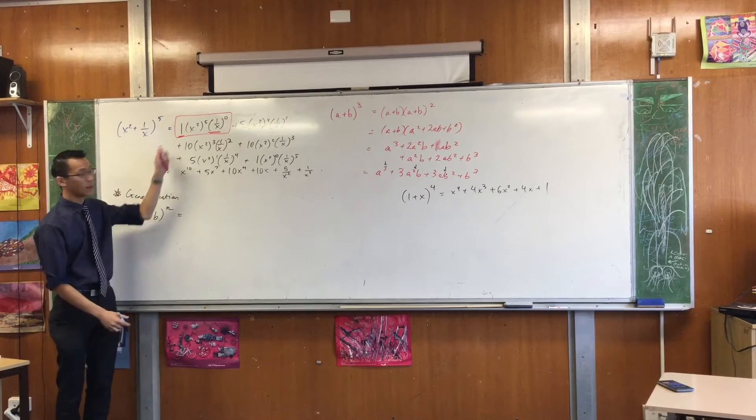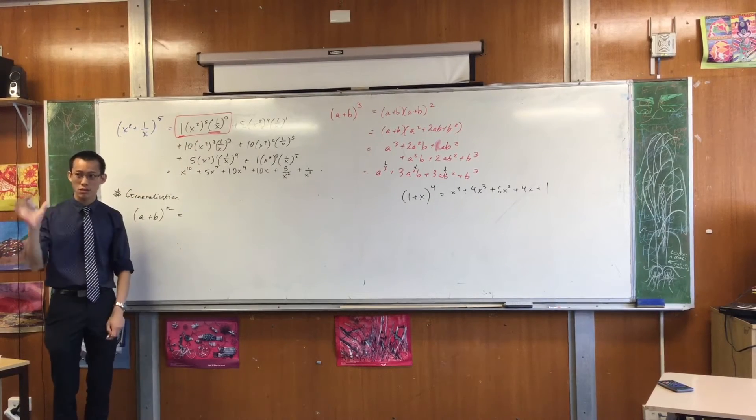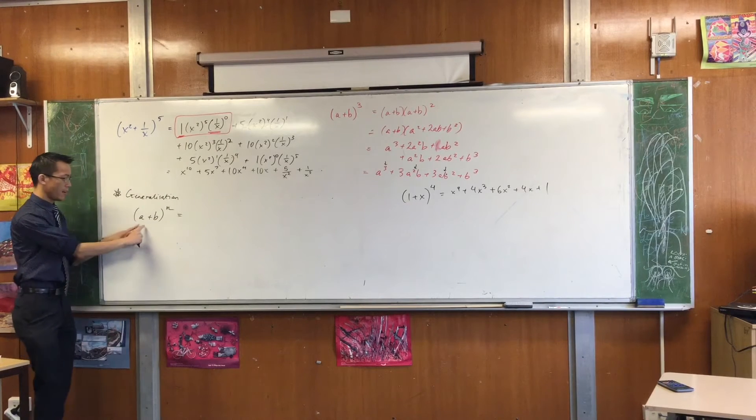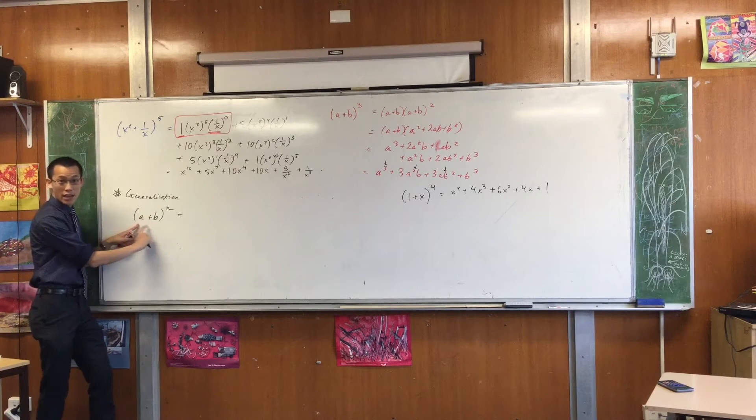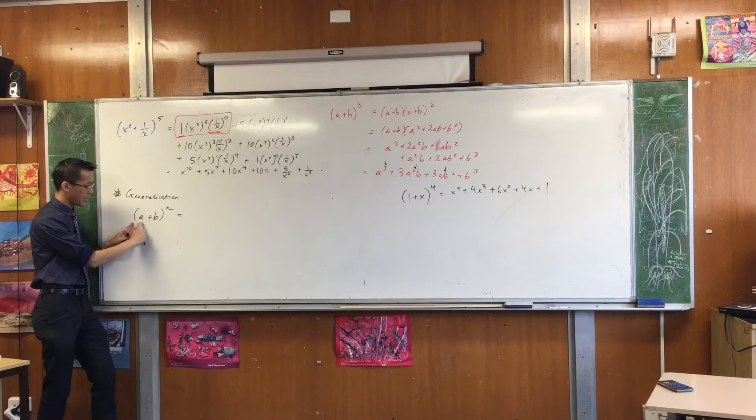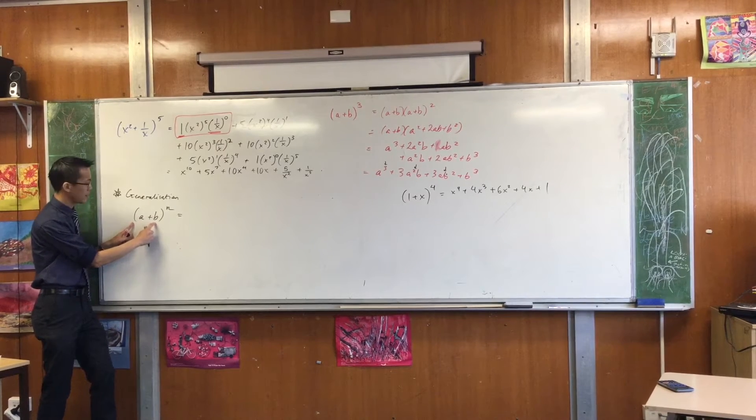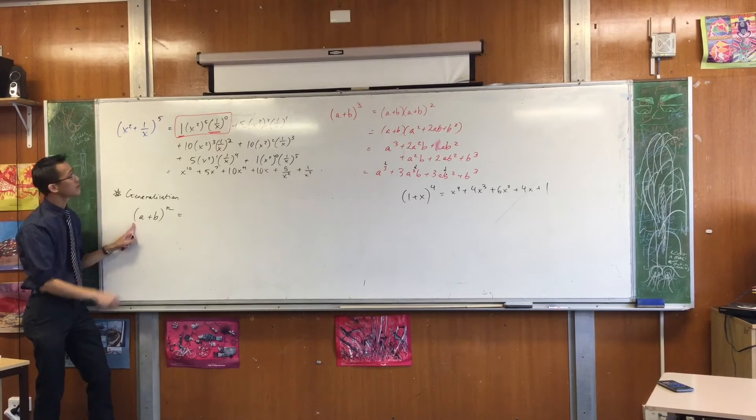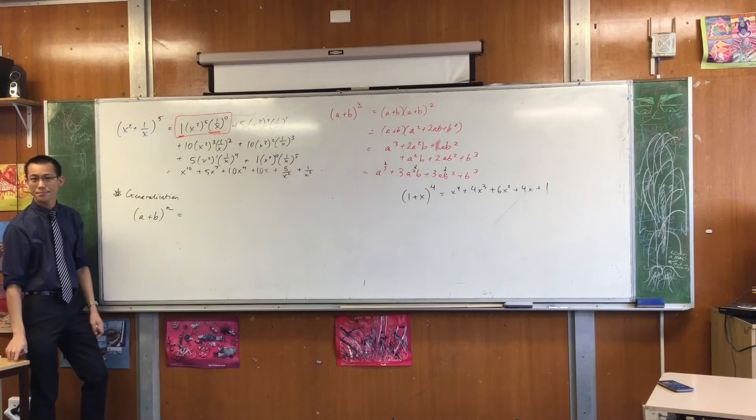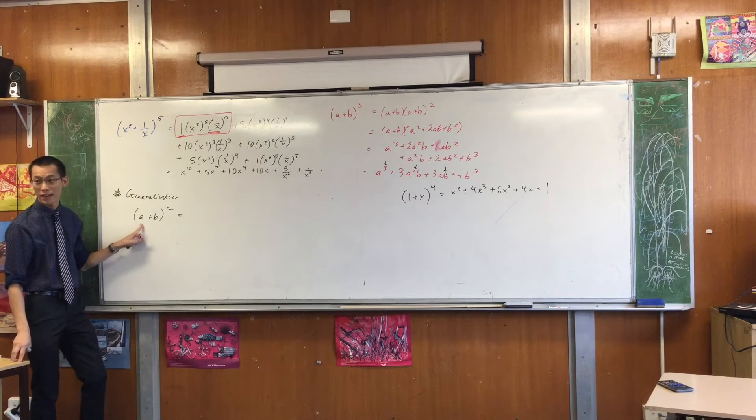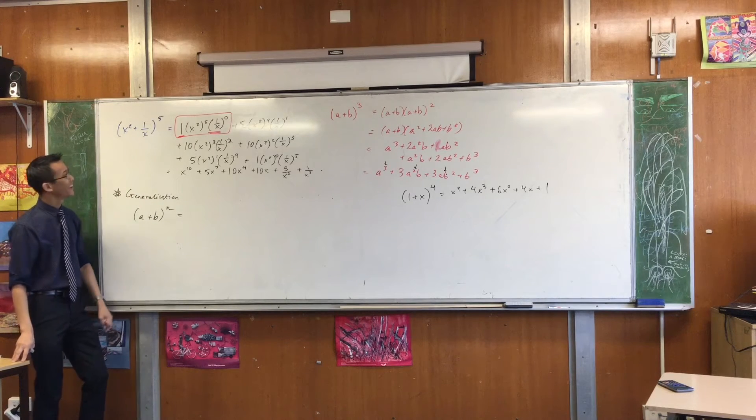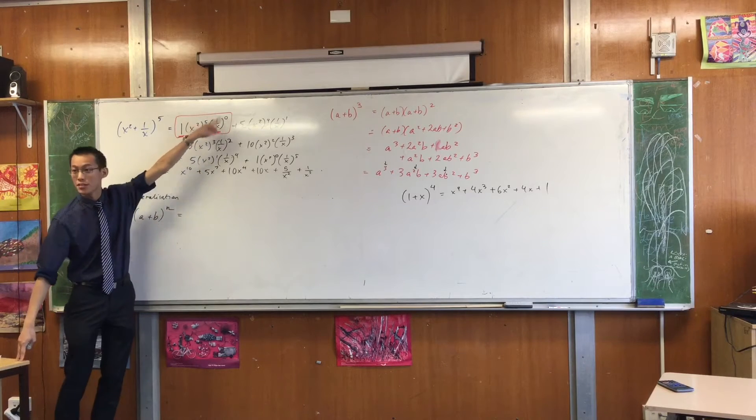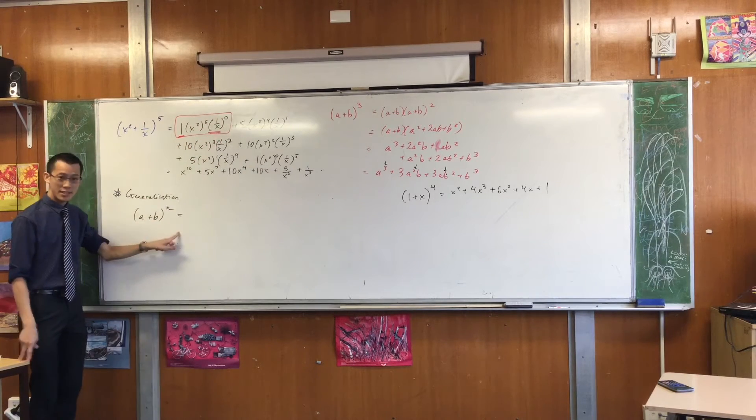Now, every single time you can see there are three components. Let's do the two components that are easier first. If you've got an a and a b, you've got some number of these and some number of these. So what's the very first term going to have? How many a's will I have and how many b's will I have? This time, I start off with five and zero.